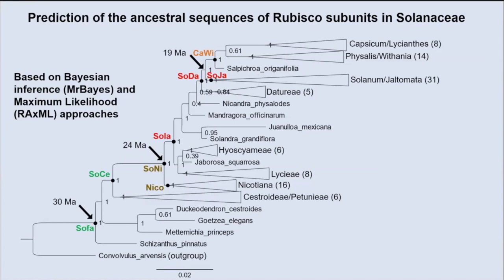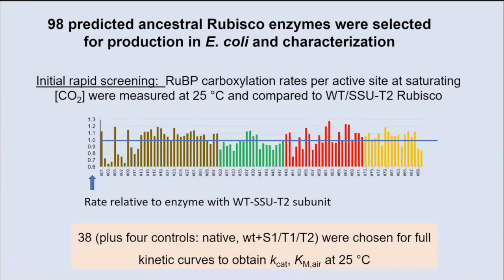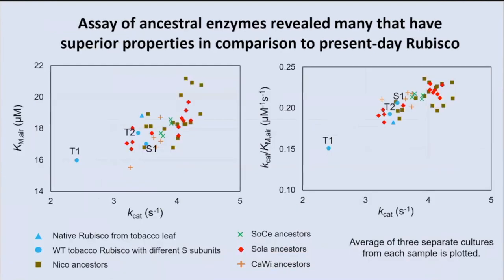During the pandemic, Miatt expressed 98 of these predicted ancestral Rubisco enzymes in E. coli and characterized them by a rapid screening method. The blue line marks the bar above which enzymes show indication of being superior to the wild-type enzyme expressed in E. coli. From the initial screen, good candidates were identified, and Miatt then selected 38 for full kinetic curves — much more work than the initial screen — to confirm whether they were also superior. Indeed, the assay of ancestral enzymes revealed a number with superior properties compared to present-day Rubisco, with higher catalytic efficiency and higher turnover rate. These could never have been predicted just by looking at the structure because they have multiple — around ten or so — amino acid changes.